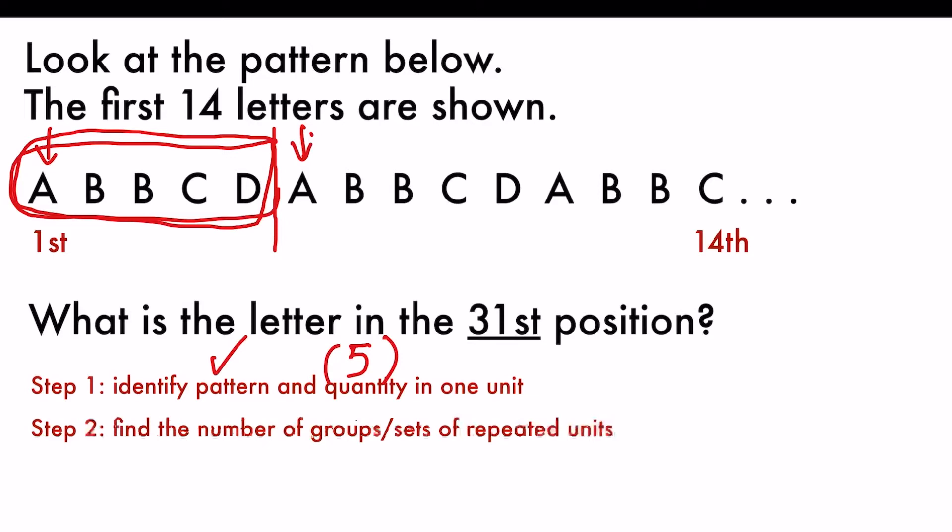Step number two, find the number of groups or sets of repeated units. So A, B, B, C, D is one unit. Your job now is to find the number of these units. Given that we know there are 31 letters all together, we will use 31 divided by 5. Why do I divide by 5? Because there are five letters in one unit. So my answer will be 6 with remainder 1.